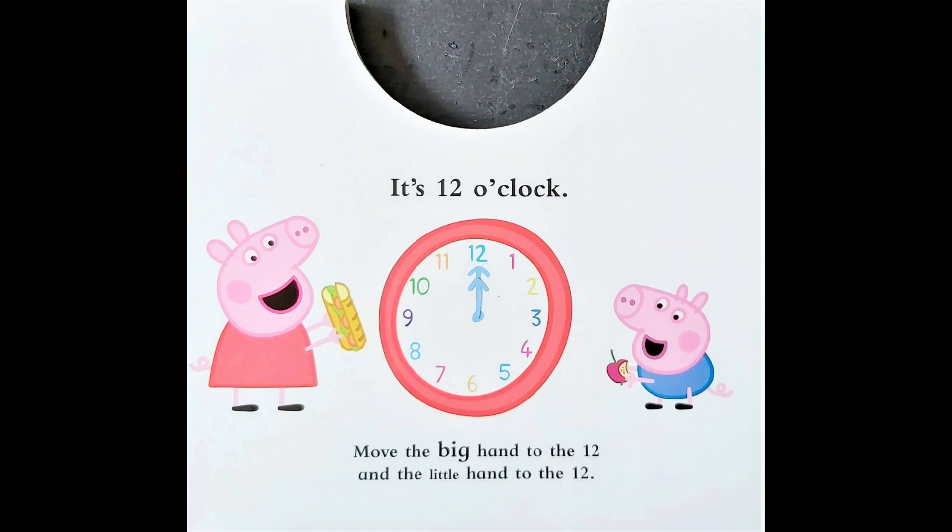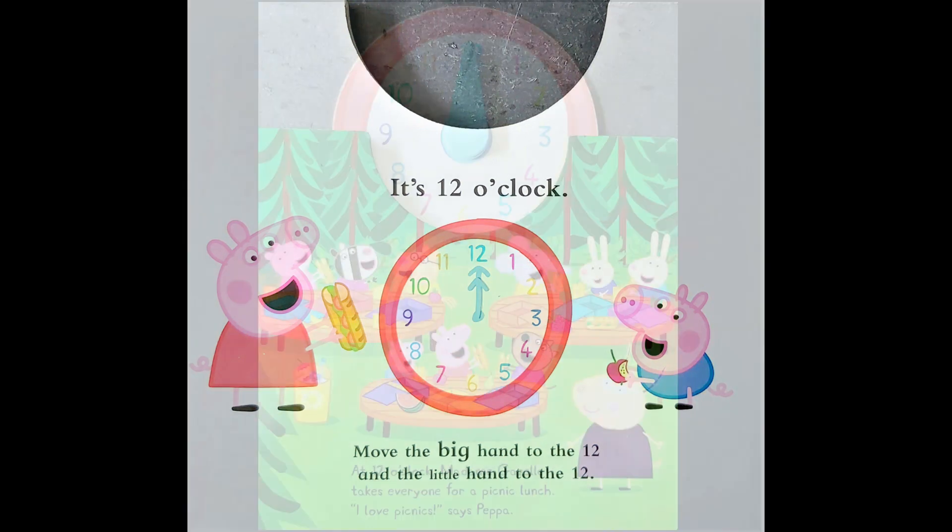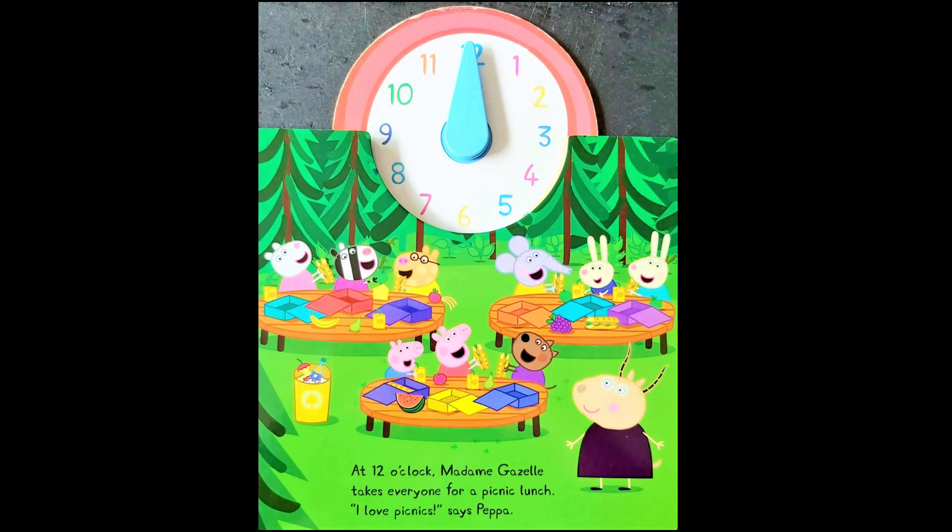It is twelve o'clock. Move the big hand to the twelve and the little hand to the twelve. At twelve o'clock, Madam Gazelle takes everyone for a picnic lunch. I love picnics, says Peppa.